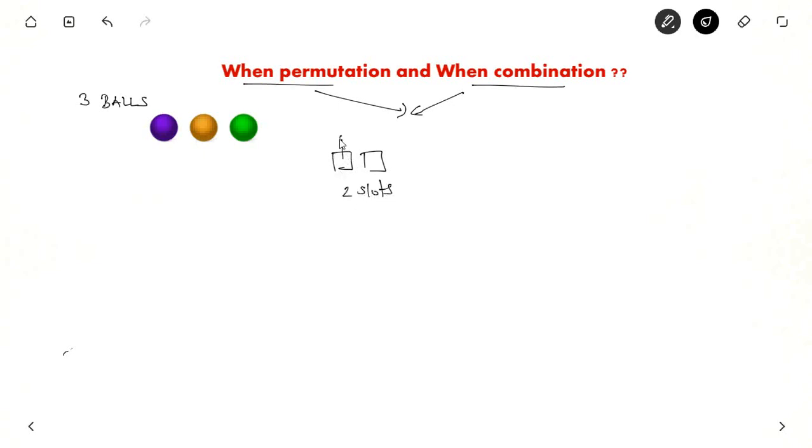So in the first box 3 ways are there, 1 ball has already gone. So in the second box 2 ways are there. So 3 into 2 is 6. This is represented as 3P2 which is nothing but 3 factorial by 3 minus 2 the whole factorial which is 6. There are 6 ways of doing this.